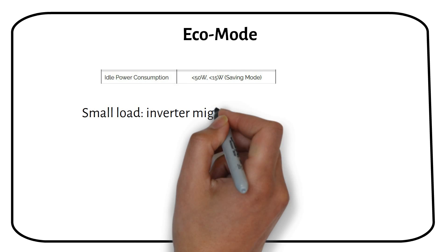When you enable Eco mode in the settings, the idle power consumption reduces. The inverter will detect a load, turn on the AC output, and power that load. However, if the load is too small, the inverter might not turn on.